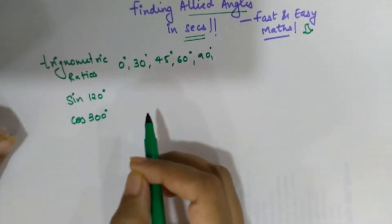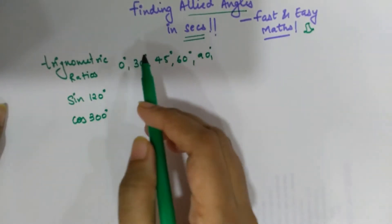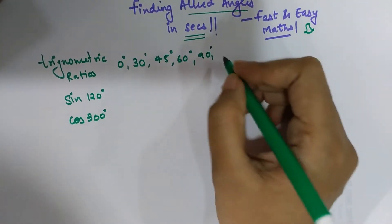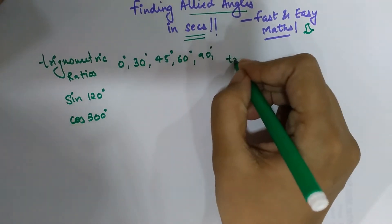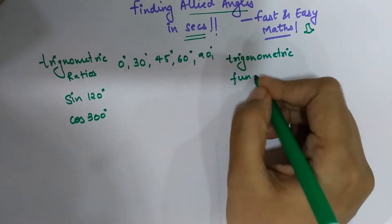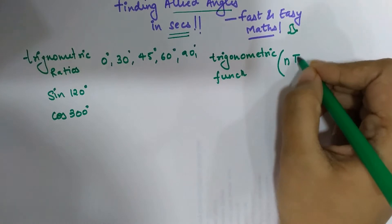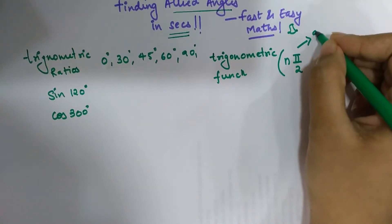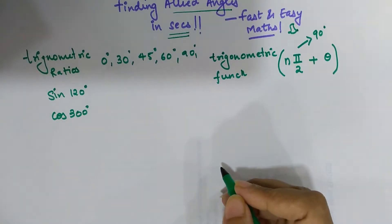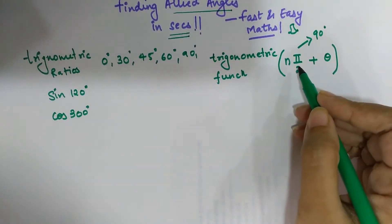I'm going to show you a formula which will always give you the correct answer. If you remember this formula, you'll be able to solve any of these questions in a matter of seconds. The formula is: any trigonometric function has to be expressed in terms of n × (π/2) plus θ, or equivalently n × 90° plus θ. Your first step is to convert the angle into this form.